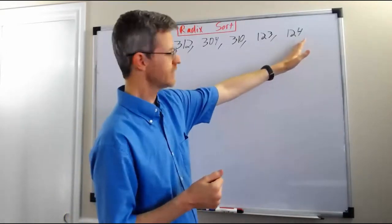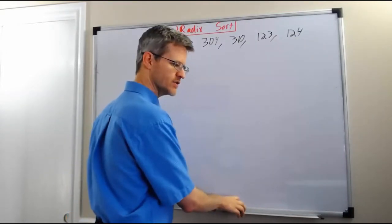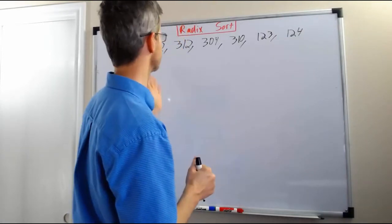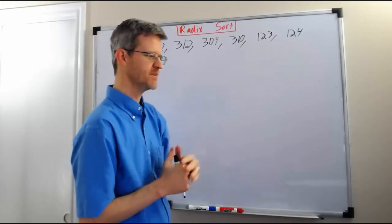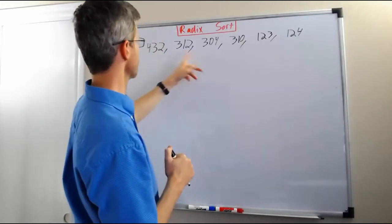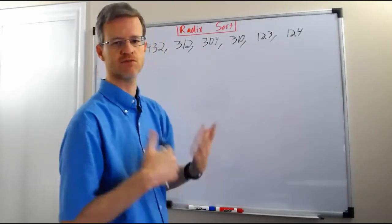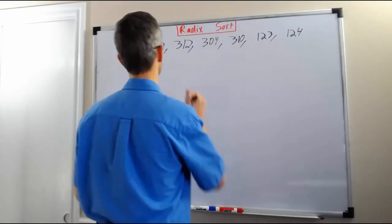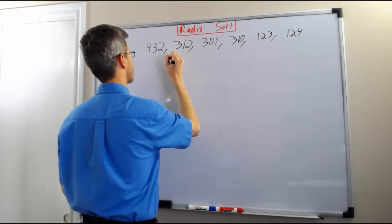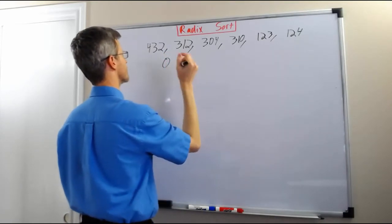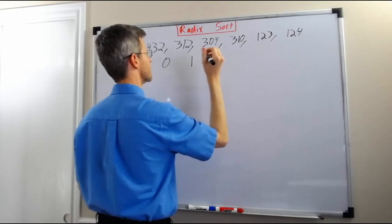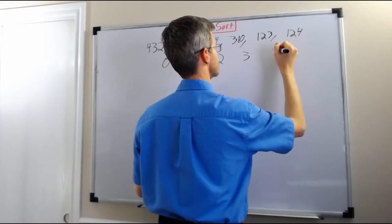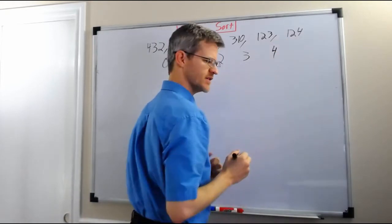So here are our example numbers. We're going to have 5 bins just so that things fit on the board better — I didn't try to have 10 bins all the way across. So I only have digits from 0 to 4, but this would work for digits from 0 to 9, or alphabetic characters, or ASCII characters, or whatever. We have a bin for the least significant digit of 0, 1, 2, 3, and 4.